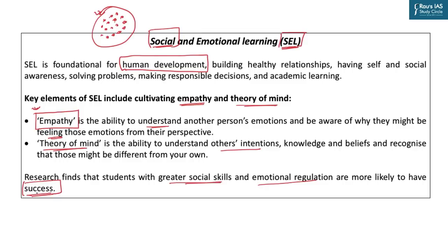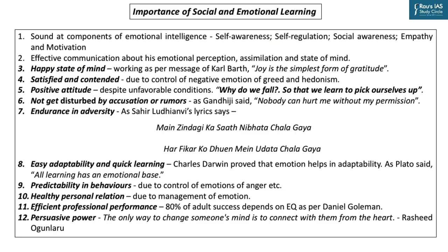Now let's see how social and emotional learning leads to overall success in life. First of all, a person having good social and emotional skills will be an emotionally intelligent person. The components of emotional intelligence will be very sound — there will be awareness of one's own feelings and the emotions of others, and empathy is one implicit part of emotional intelligence. When there is awareness about one's own emotions and the emotions of others, and one possesses empathy, then communication becomes very effective.